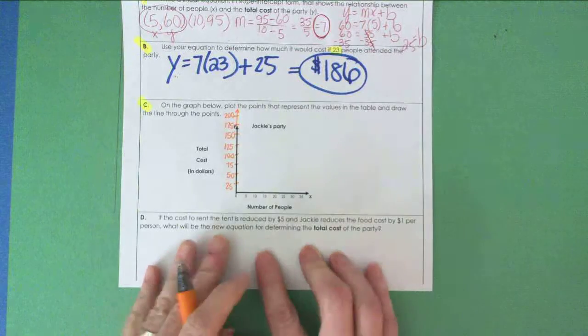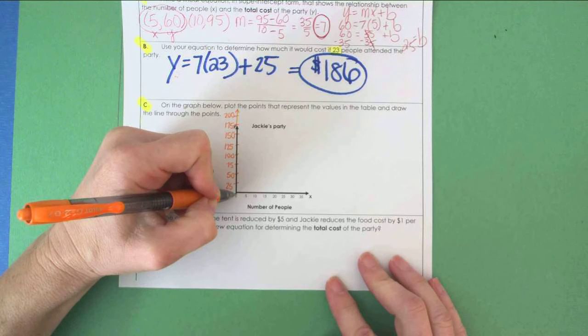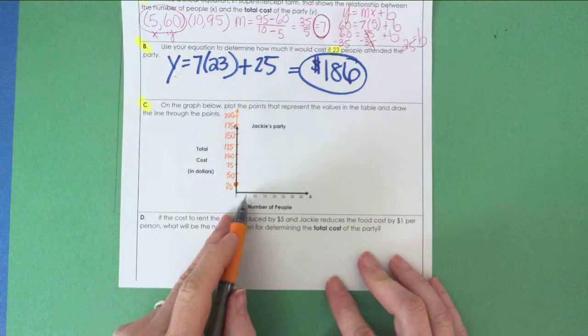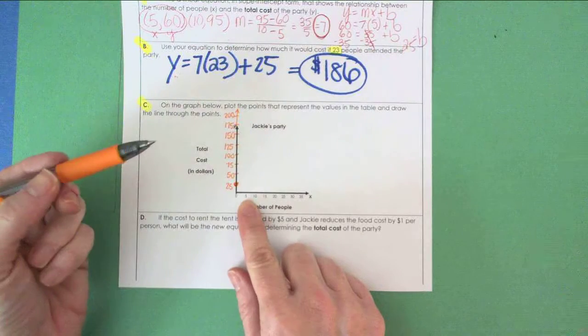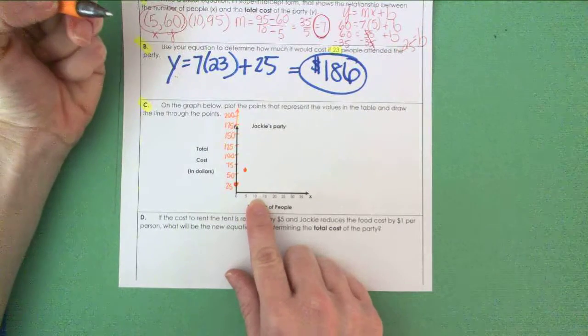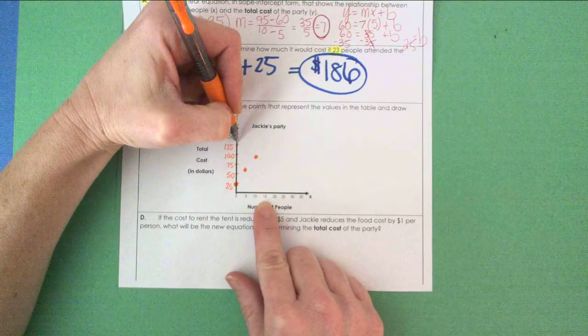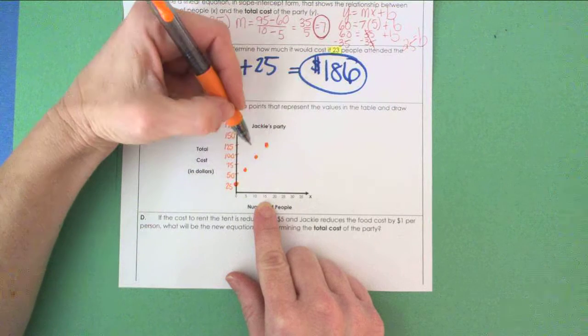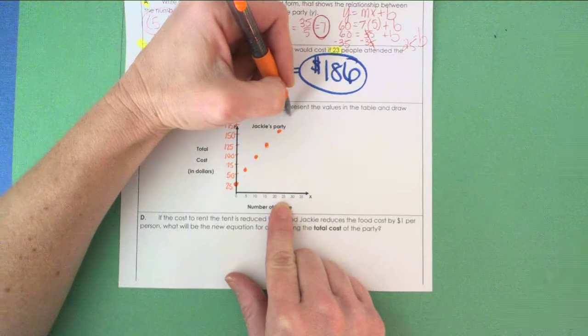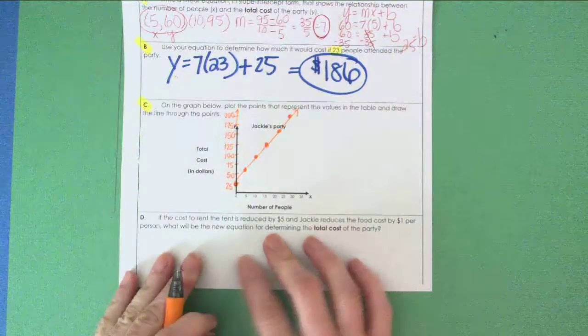Now I'm going to plot these points the best I can without having actual graph paper here. If I don't invite anybody to the party, I'm still going to have to pay $25 for the tent. So I'll put a point at (0,25). If five people come, it's going to cost me $60. Then 10 goes with 95, so I'll put that a little underneath 100. 15 goes with 130, just a little bit above 125. 20 goes with 165, about right there. And 25 goes with 200. You can see that lines up pretty nicely. Not the easiest graph to make because I don't have graph paper, but you can see the linear nature of it.